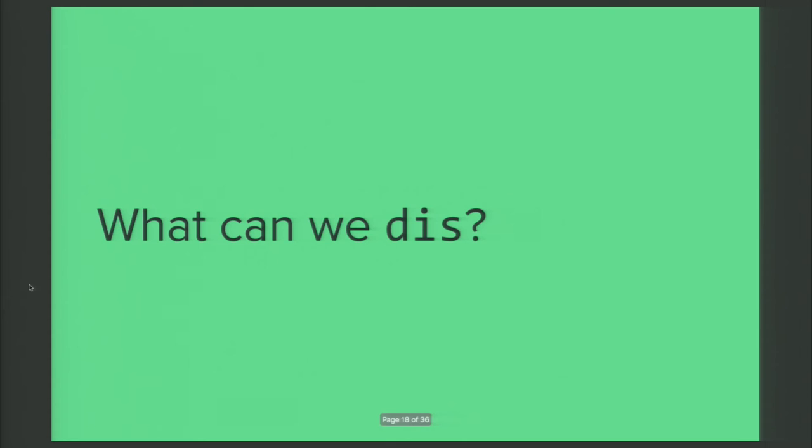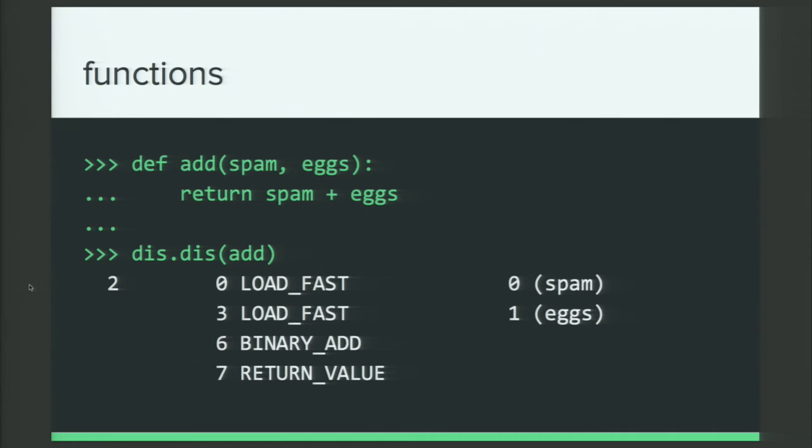And so, now we have a basic idea of how the dis function works, how we can disassemble some bytecode. What can we use it on? Let's try to dis some things. Let's find out what we can dis. I love this name. Okay. So, we already saw we can dis a function. Here's a nice little Pythonic example one. We're adding spam and eggs. And if we dis add, we see we have a slightly, ever so slightly more complex thing to do here. Which is we're loading two things on spam and eggs and then we're doing a binary add on that. Cool.